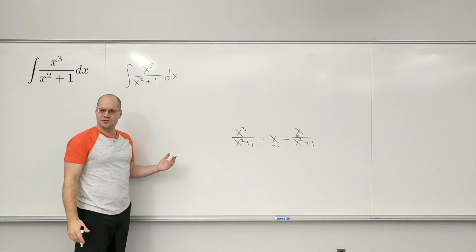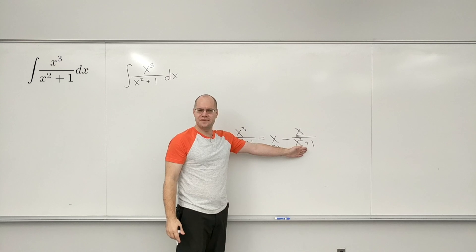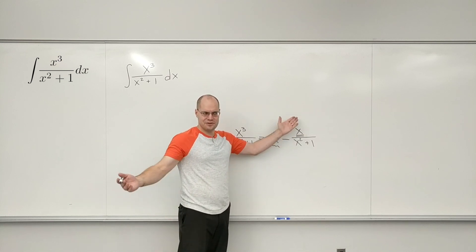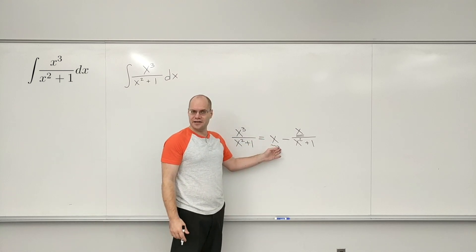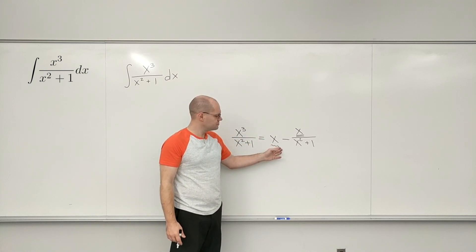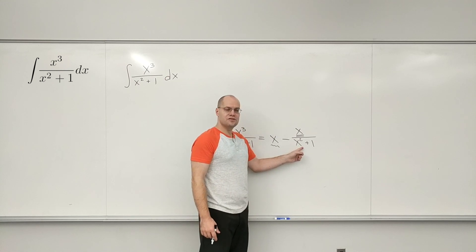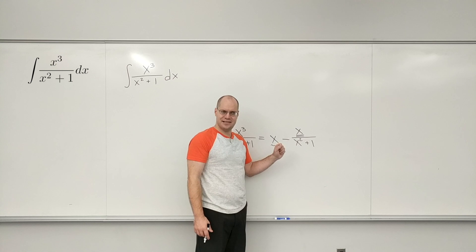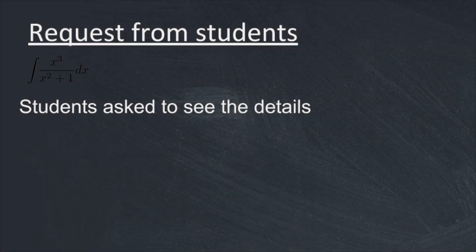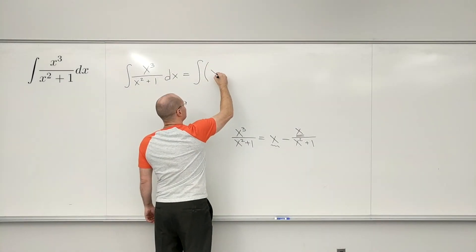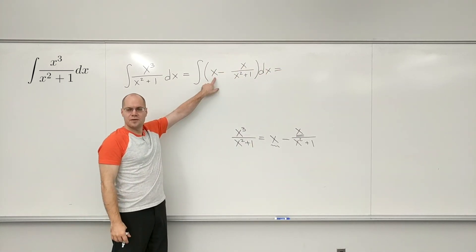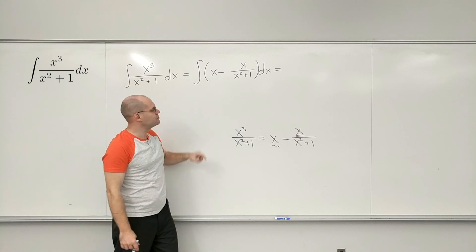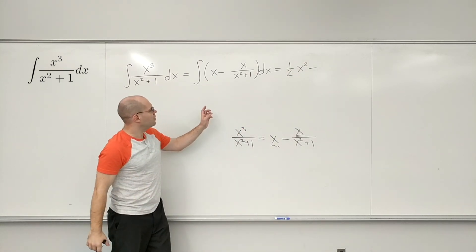Or do we actually have to do this, or can we just integrate this on the fly? I think we can integrate this on the fly, we've been at it for a couple of weeks now, we're pretty good. This is one-half x squared, and this is one-half log of x squared plus one, do you guys see that? So we have, so this term produces one-half x squared.